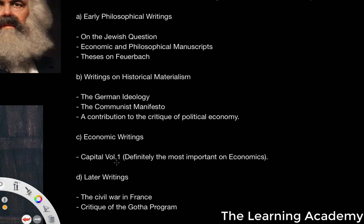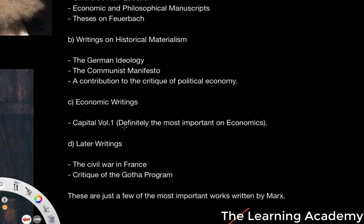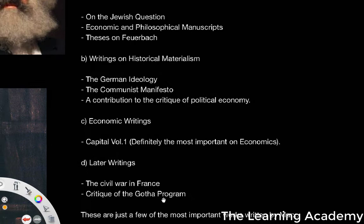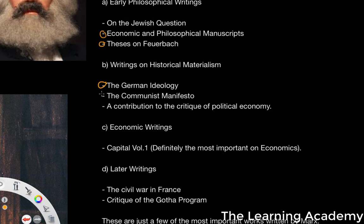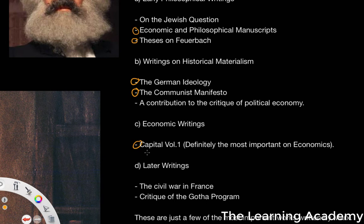You've also got very important economic writings, such as Capital Volume 1, which is probably the most important when it comes to economics. And then there are his later writings on the Civil War in France and the Critique of the Gotha Programme. The important ones would arguably be the Economic and Philosophical Manuscripts, the Thesis on Feuerbach, the German Ideology, the Communist Manifesto, and Capital — though all the other works tie into the things he developed in these anyway.